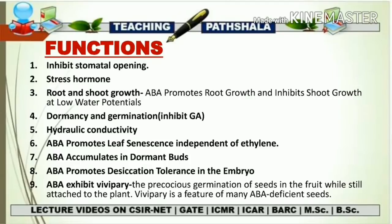The eighth function is that ABA promotes desiccation tolerance in the embryo. An important function of ABA in developing seeds is to promote desiccation tolerance, as desiccation can severely damage membranes and cellular constituents. During mid to late stages of seed development, specific mRNAs accumulate in the embryo at times of high endogenous abscisic acid. These mRNAs encode proteins known as LEA — late embryogenesis abundant — proteins, which are involved in desiccation tolerance. Synthesis of most LEA proteins is under ABA control.